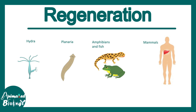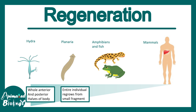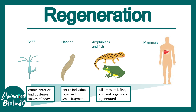Regeneration is seen in different phyla of the animal kingdom, and regenerative potential decreases as we go up the phylogenetic strata. Hydra and Planaria have amazing regenerative potential — the entire organism can basically be regenerated. Amphibians have a little less capacity; they can regrow their limbs but not the entire body. In mammals, the potency decreases further and only some organs can be regenerated.